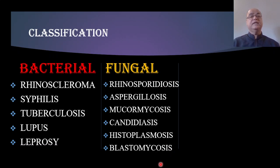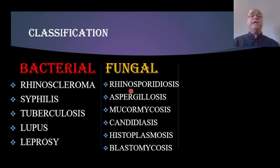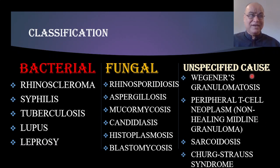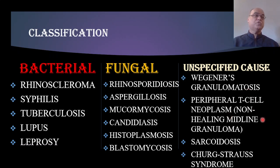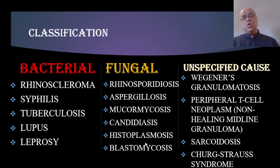Candidiasis, histoplasmosis, and blastomycosis are relatively rare in the nose and paranasal sinuses. An important distinction — commonly asked as a multiple choice question — is that rhinoscleroma is a bacterial granuloma, while rhinosporidiosis is a fungal granuloma. A third group of granulomas is of unspecified cause, including Wegener's granulomatosis, peripheral T-cell neoplasm (also called Stewart's granuloma or non-healing midline granuloma), sarcoidosis, and Churg-Strauss syndrome. Today we focus on bacterial granulomas, specifically rhinoscleroma.